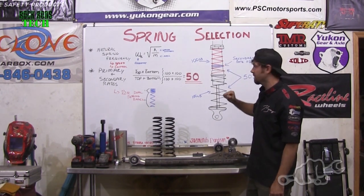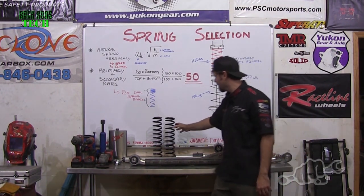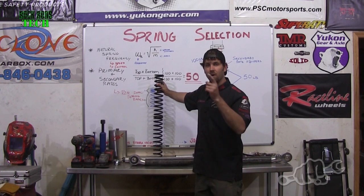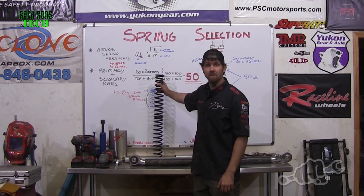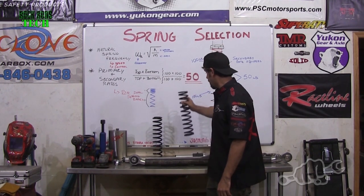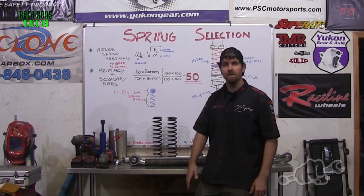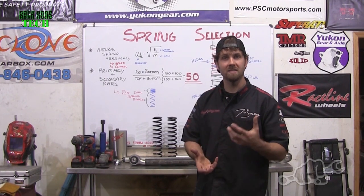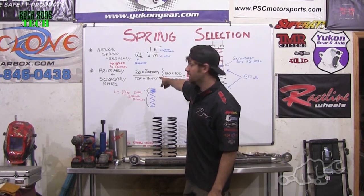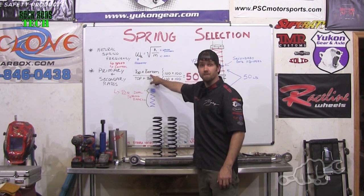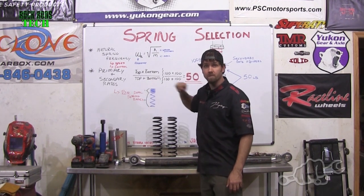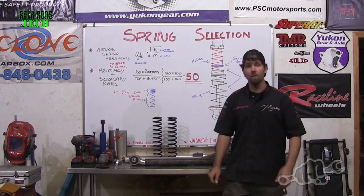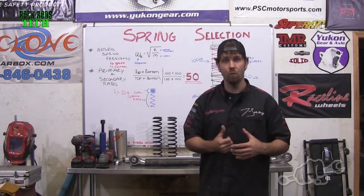If you have a coilover system, you have springs stacked on top of each other. For example, a 100 lb spring over a 100 lb spring — you might think that equals 100 lbs, but you're wrong: it's actually 50 lbs. Two springs stacked on top of each other create a softer combined spring rate. The formula is: (top spring × bottom spring) ÷ (top spring + bottom spring). So 100 × 100 ÷ (100 + 100) = 50 lbs.